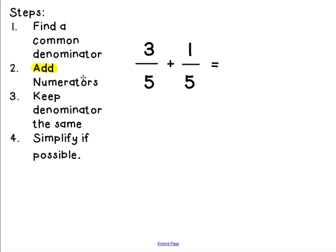First, I want to point out the steps I have along the side. First is finding a common denominator. Second, we'll be adding the numerators. Third, keep the denominator the same, and then simplify if possible. So let's go through how to do that.